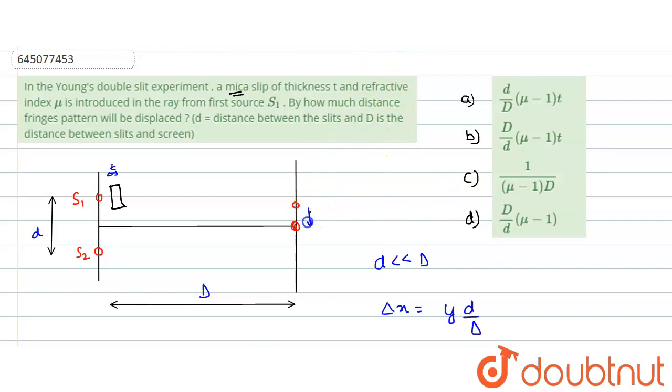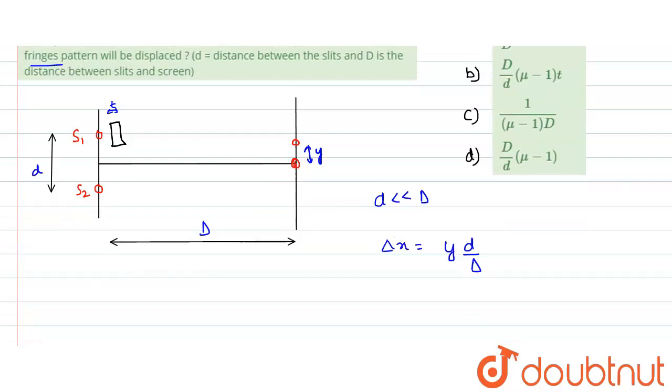So consequently each and every maxima and minima would be shifted by some location. Let's say this location is y. Now the location which is moved by a maxima or by a minima would be the same distance at which the fringe pattern would be moving, because everything is shifted by a distance of y. In normal cases we say that our path difference would be equals to y times d divided by capital D.